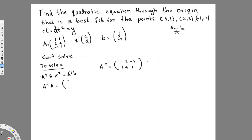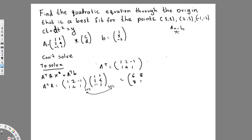Now calculate A transpose A. A transpose is [1, 2, -1 / 1, 4, 1] and A is [1, 2, -1 / 1, 4, 1] (3×2). This is 2×3 times 3×2, so we get a 2×2 matrix. Doing first row–first column, first row–second column, second row–first column, second row–second column, you get the answer: [[6, 8], [8, 18]].